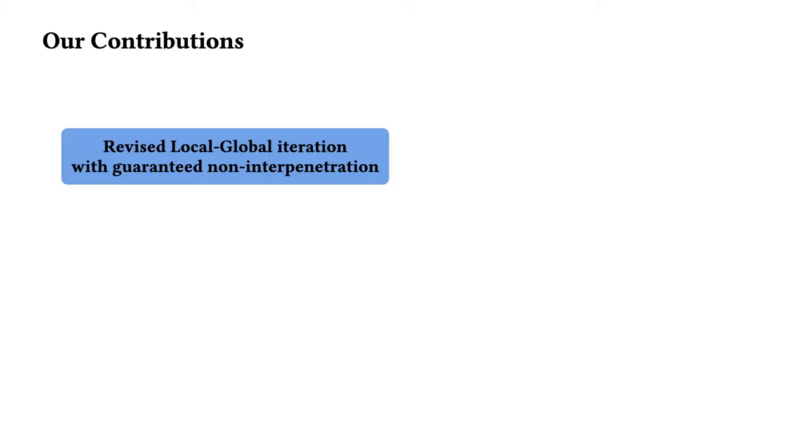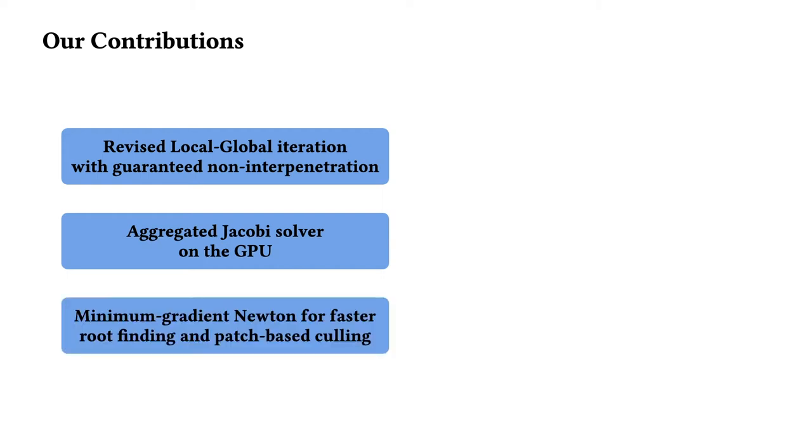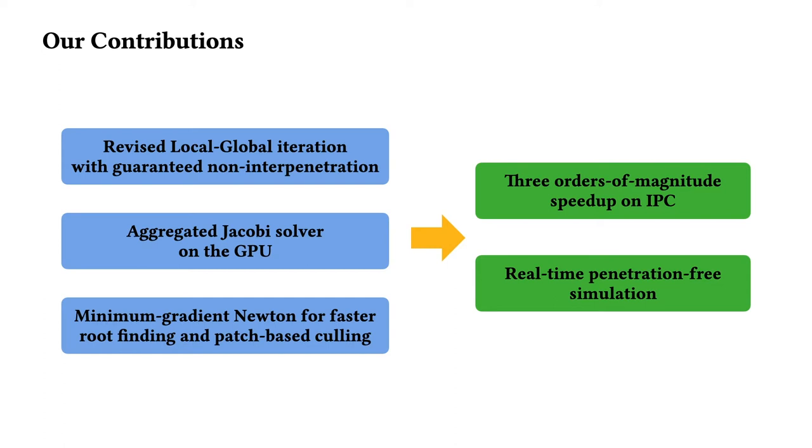We propose a simulation framework on the GPU for penetration-free and fast deformable body simulation. This includes a revised non-linear solver for IPC based on a local-global-style constrained projection scheme inspired by projective dynamics, an aggregated Jacobi solver for the global step harvesting the computation capacity on modern GPUs by lumping several Jacobi steps into a single iteration, and a minimum gradient Newton algorithm for fast CCD and an efficient patch-based culling strategy on the GPU. This together leads to an up to three orders of magnitude speed-up on IPC and enables real-time penetration-free simulation for 100k elements.